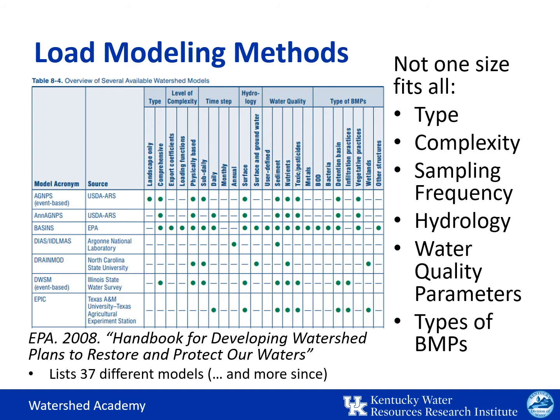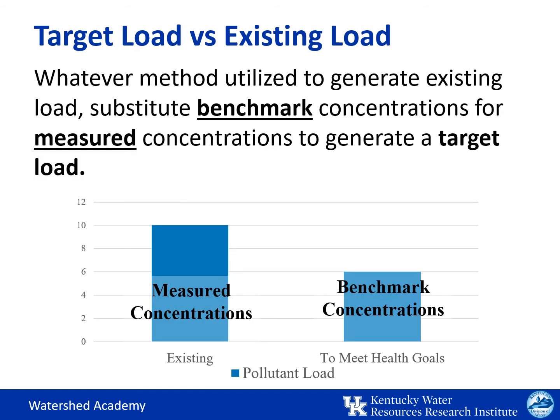Model selection can depend on the type of data you have, your sampling frequency, the water quality parameters you assessed, and the types of BMPs you expect to implement. The point is, you should be thinking about and making decisions on what type of modeling you plan to use so that you can tailor your data collection to meet the needs of that model. Once you've settled on a model, you'll use the same method used to calculate existing loads with your measured concentrations to generate a target load using benchmark concentrations.